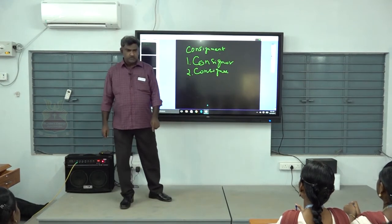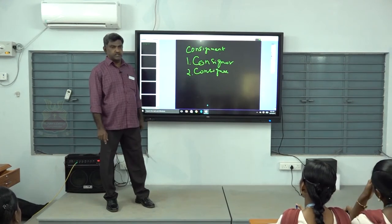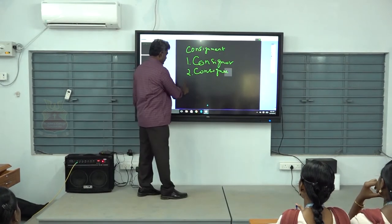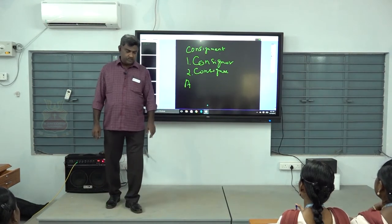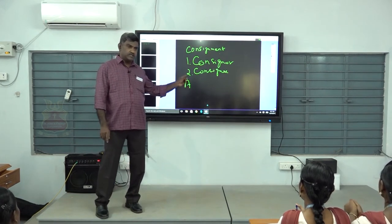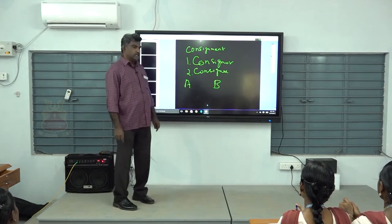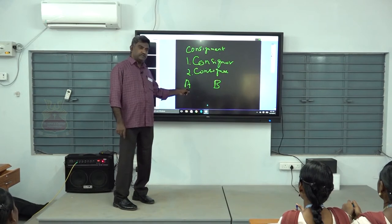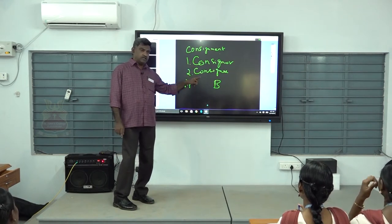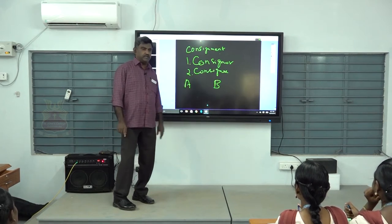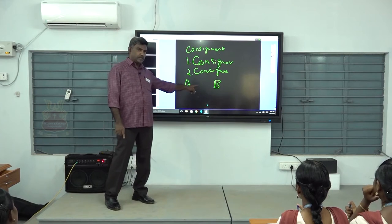The consignor is the person who dispatches the goods to the agent. The person to whom the goods are dispatched is called the consignee. For example, A residing at Kwayamathur is the manufacturer of textile yarn, and B residing at Thirupur is the dealer of yarn. A consigned cotton yarn from Kwayamathur to B in Thirupur to be sold on behalf of A. So A is the consignor and B is the consignee.